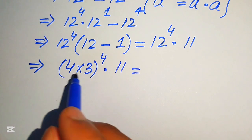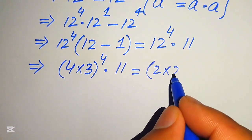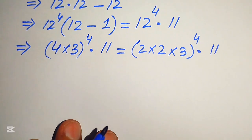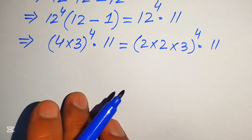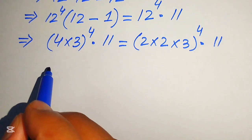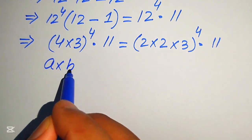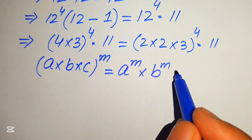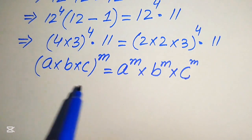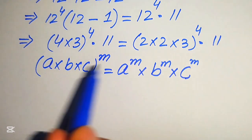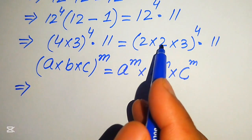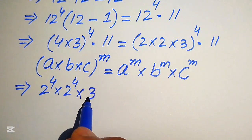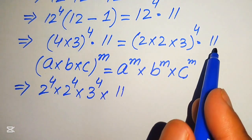If we simplify further, we break 4 as 2 multiplied by 2, giving us (2 × 2 × 3) to the power of 4, all multiplied by 11. We apply the exponent law: if you have a × b × c all raised to the power of m, it equals a^m × b^m × c^m. So we distribute the exponent of 4 on each value, giving 2 to the power of 4 multiplied by 2 to the power of 4 multiplied by 3 to the power of 4, all multiplied by 11.